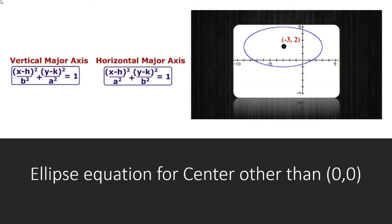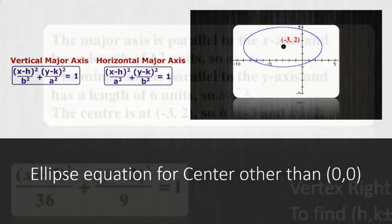Okay, here we have the ellipse equations for a center other than (0,0). For the vertical major axis we have (x-h) squared over b squared plus (y-k) squared over a squared equals 1. If the major axis is on the horizontal axis or the x-axis, the equation is as follows. (x-h) squared over a squared plus (y-k) squared over b squared equals 1.